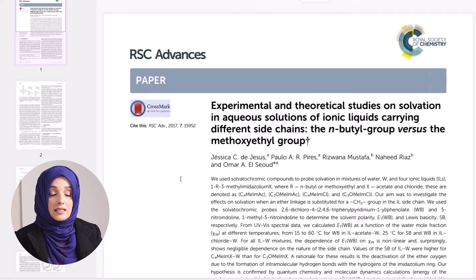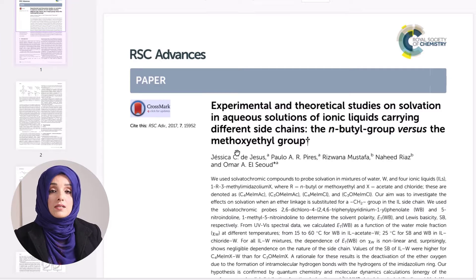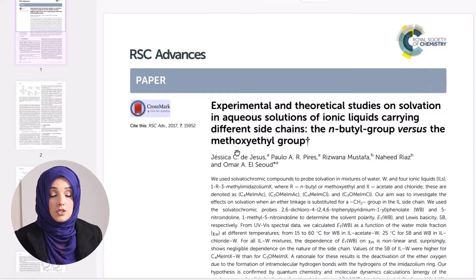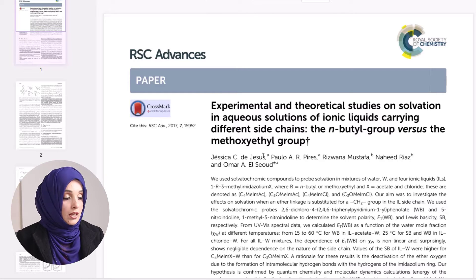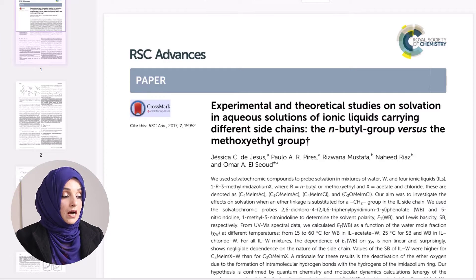First of all, let's understand what a citation is. For example, this is a research paper that has been published by some authors with the affiliation of some journals and institutes. This is the information which is going to be included in a citation. You will find the name of the journal on the top of the paper — for example, RSC Advances is the name of the journal here.